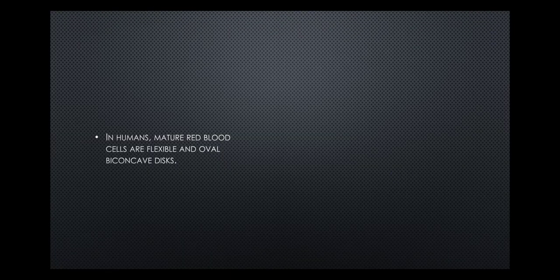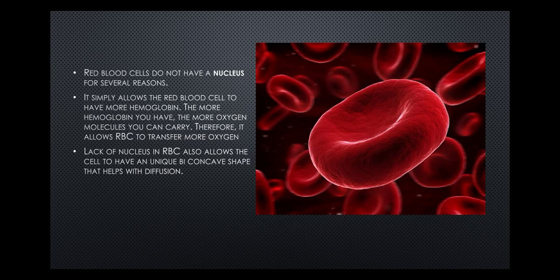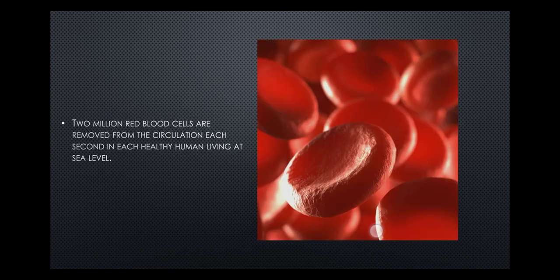In humans, mature red blood cells are flexible and oval biconcave discs. The red blood cell does not have a nucleus — the advantage of this is that it allows the red blood cell to have more hemoglobin. The more hemoglobin one has, the more oxygen molecules it can carry, allowing RBCs to transfer more oxygen. The lack of a nucleus also allows the cell to have a unique biconcave shape, which helps with diffusion.